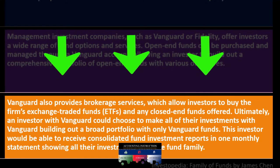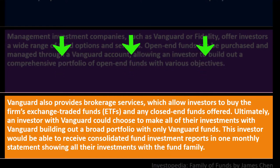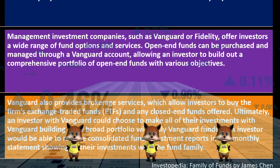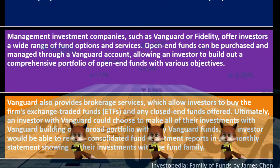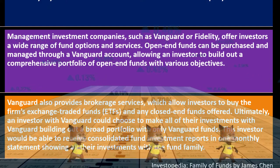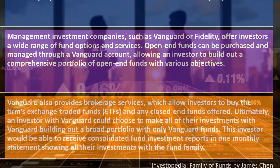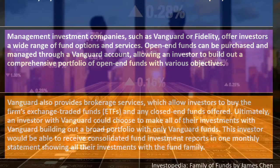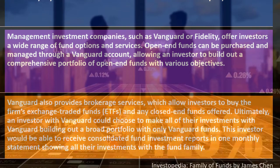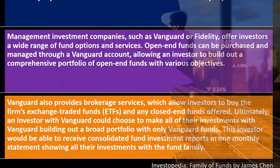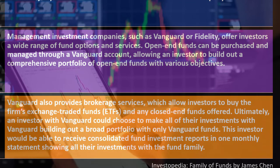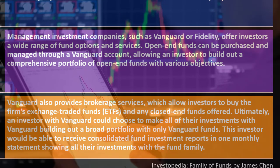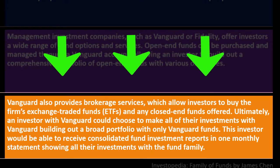If you use multiple families of funds across different platforms, it can be more difficult to see your overall percent allocation to particular categories. However, tools like Personal Capital allow you to link to multiple institutions and pull your investments together so you can see your percent allocation across all investments and help you weight them appropriately.